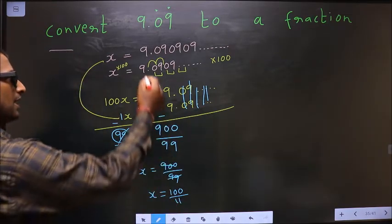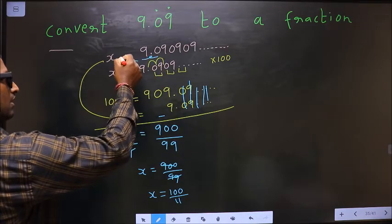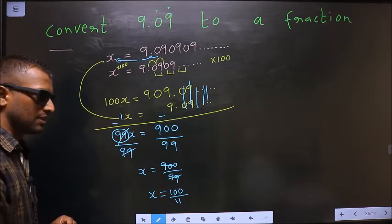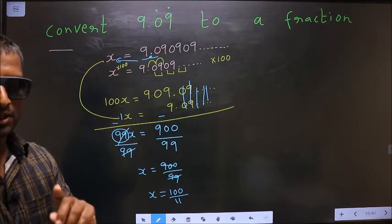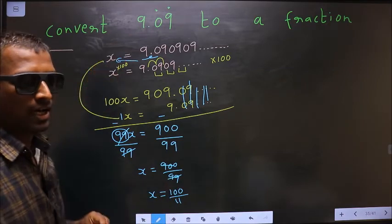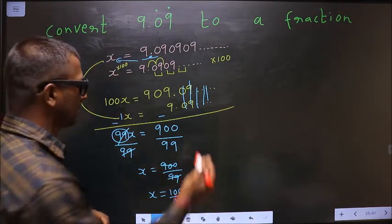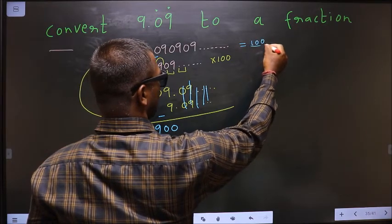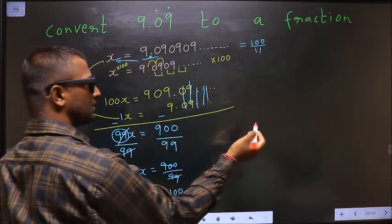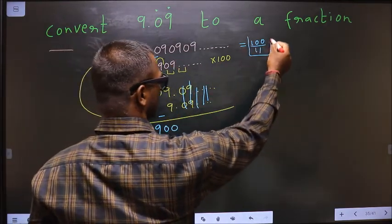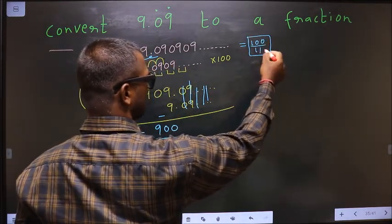Earlier we have taken this for X. Now we got X equal to 100 by 11. That means only one thing: that these two are equal. So this equals 100 by 11. Thus I have converted a recurring decimal into a fraction, and this is our answer.